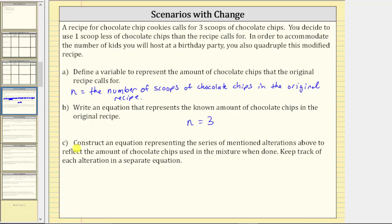For part C, we are asked to construct an equation representing the series of alterations mentioned above to reflect the amount of chocolate chips used in the mixture when done. Keep track of each alteration in a separate equation. We begin with the equation n equals three. First, you decide to use one scoop less of chocolate chips than the recipe calls for. We can represent this alteration by subtracting one on both sides, giving the equivalent equation n minus one equals three minus one.